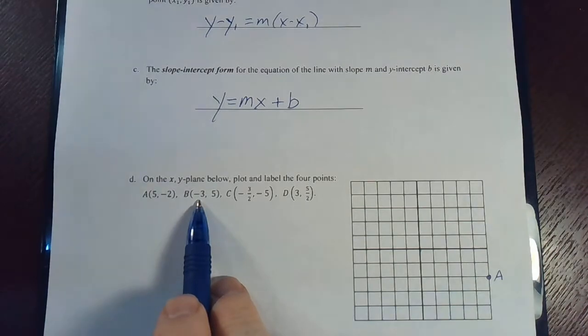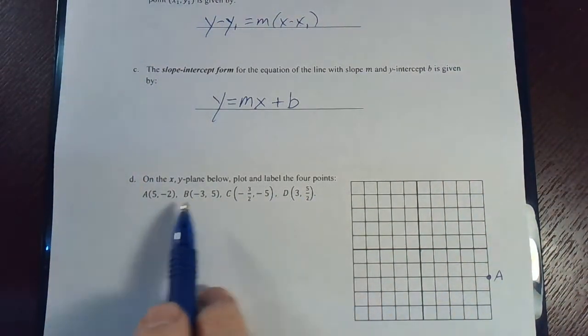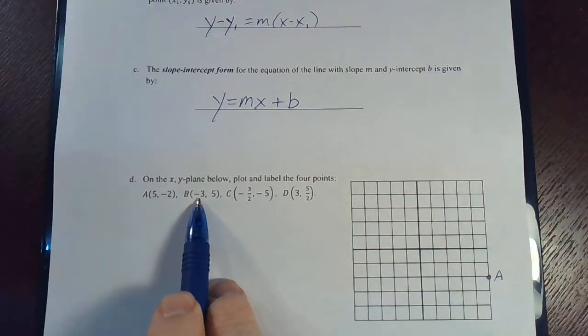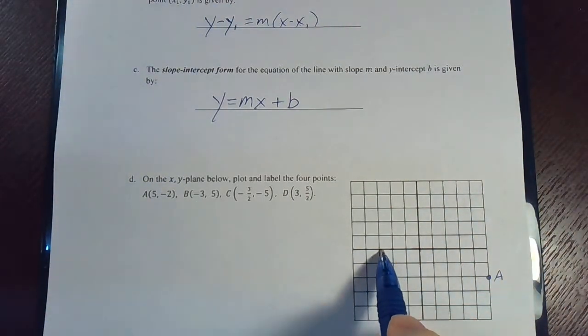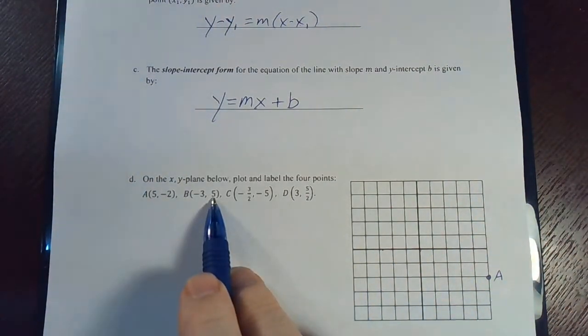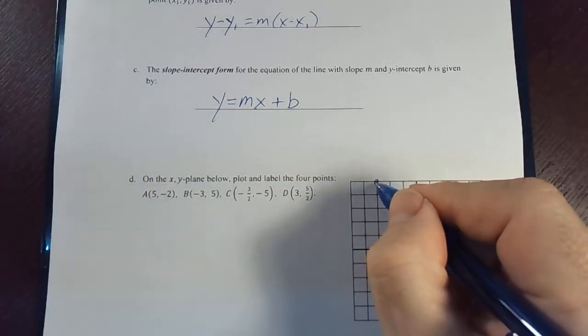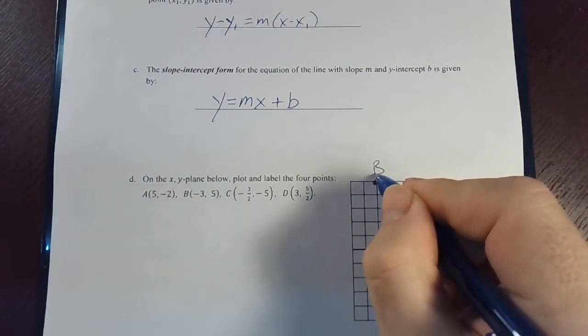The next point is negative three comma five. So the x value, the part you go left and right, we're going to go left three because it's negative three. And then positive five, up five. So left three, up five puts us right there for point b.